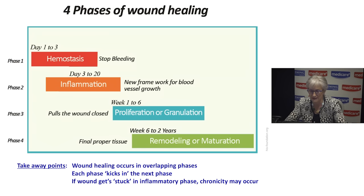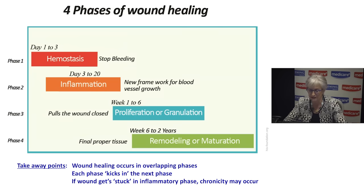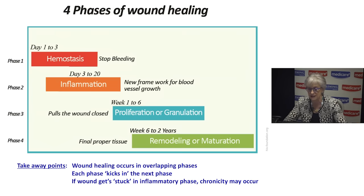What we need to understand is that wound healing occurs in overlapping phases. A wound is not just in one phase and then moves to the next — parts of the wound can be in different phases simultaneously. That's important when making dressing choices: we must choose a dressing suitable for the phases the wound is in, based on the tissue in the wound. Any wound — even a paper cut — can become chronic if it doesn't heal in the correct order and timeframe.